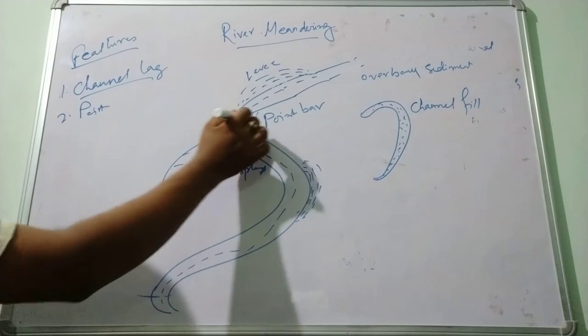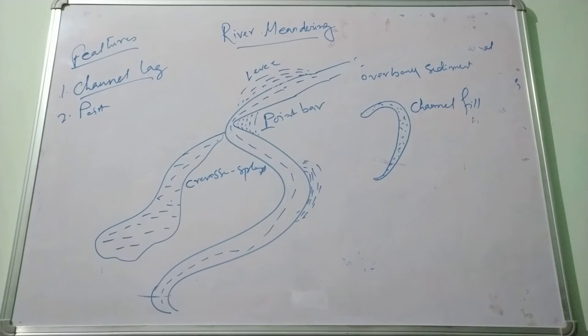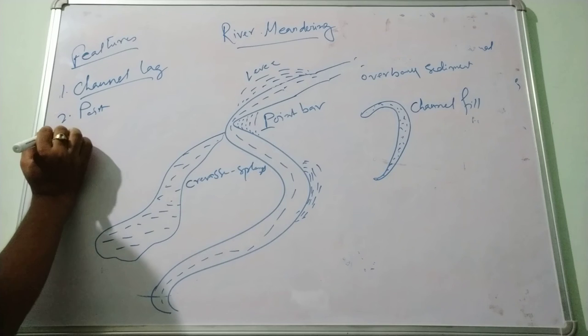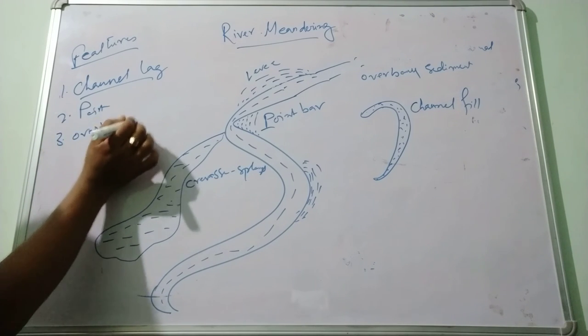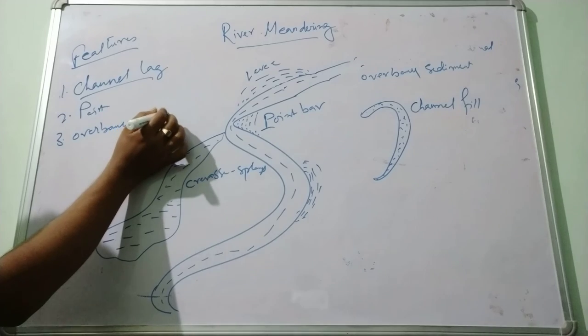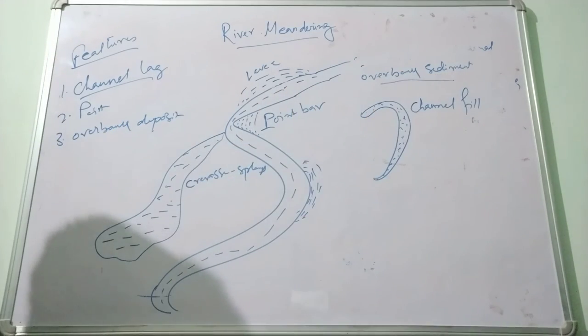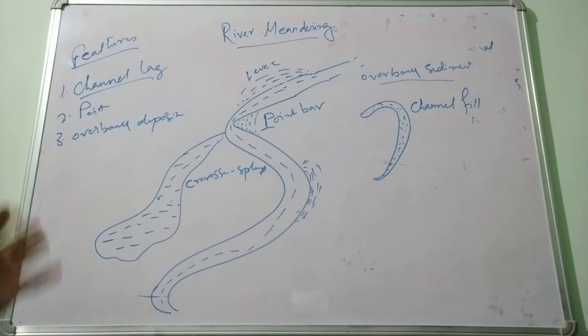Point bar. This point bar, the sediments accumulation on the convex side of the meandering belt or meandering loop. This type of deposit generally forms the sediments of river on the valley floor outside the stream channel resulting into different layers of the sand deposition.